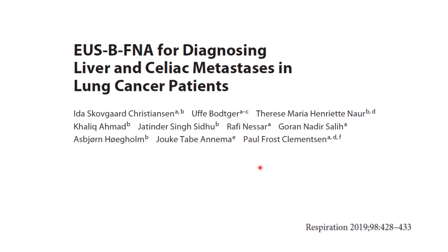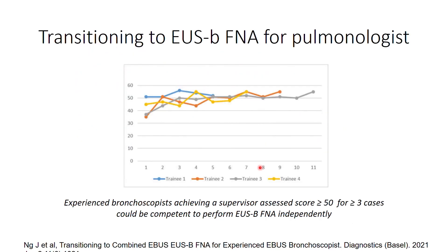A retrospective study published in 2019 showed that EUS-B FNA can be helpful in diagnosing liver and celiac metastasis and retroperitoneal nodes. A study on the learning curve showed that experienced bronchoscopists who achieved a supervised assist score of 50 or more, or performed three or more cases, could be competent enough to perform EUS-B FNA independently.